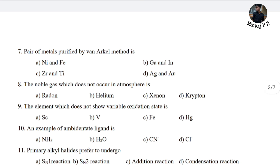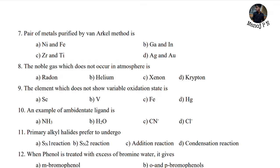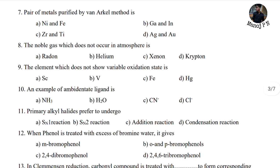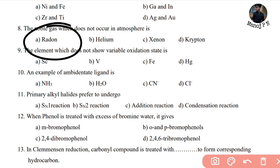Pair of metals purified by the van Arkel method — ZR method, TNO. This is what we expect with the trickle code. Next: the noble gas which does not occur in the atmosphere — Radon is not common sense, that is general knowledge, GK. Radon is the answer.